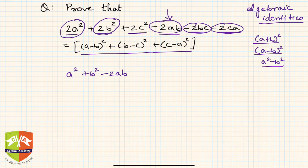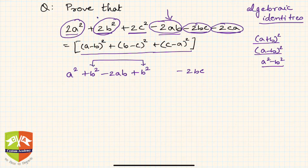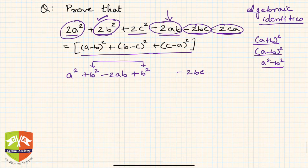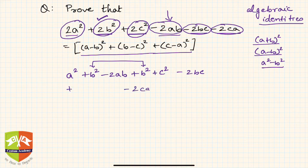Next, there is a -2bc term remaining. I need an extra b², and yes we have one available. So I write that b² here. Then I take one c² from the two c² terms and place it with the -2bc term to complete that square.